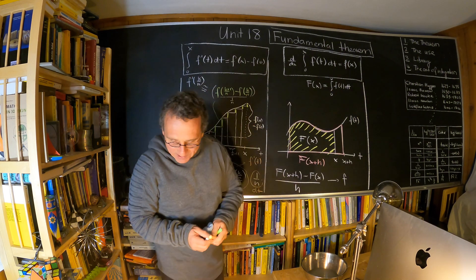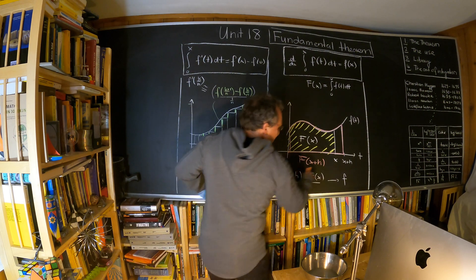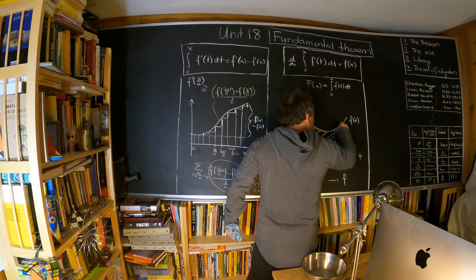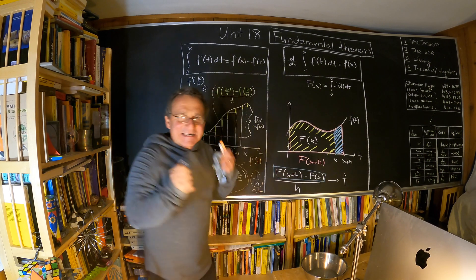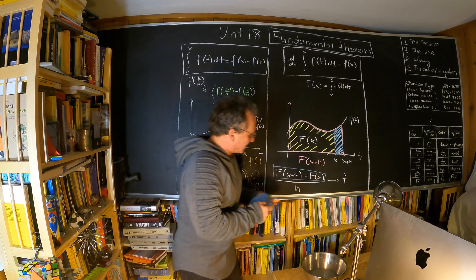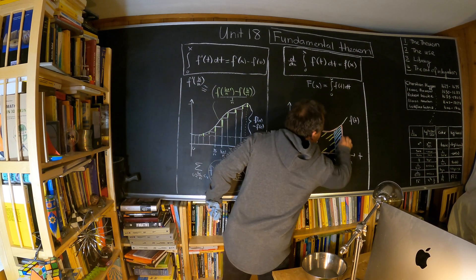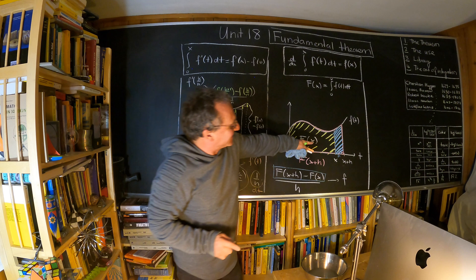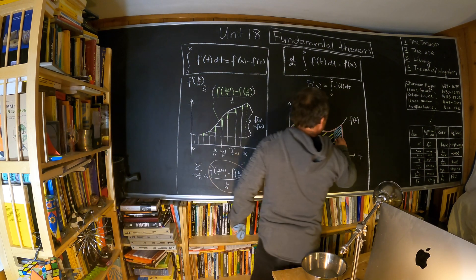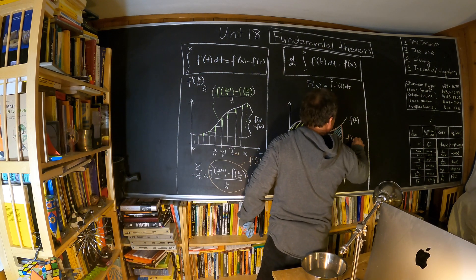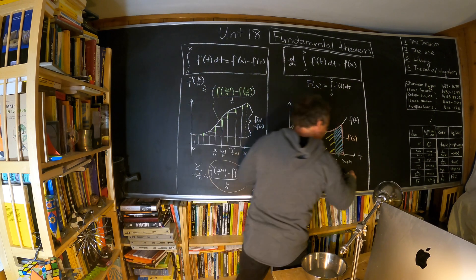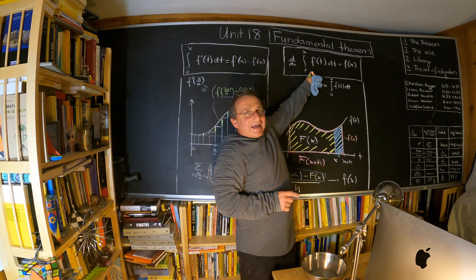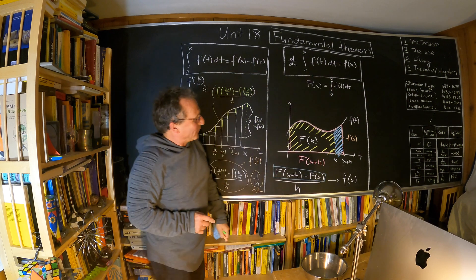Why does this go to f(x)? Because this difference is an area — it's essentially a rectangle. When we divide by h (which is the width here), we get the height, which is f(x). So that goes to f(x). That's the statement: the derivative of that integral is f(x).